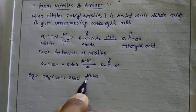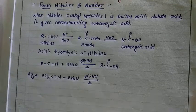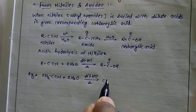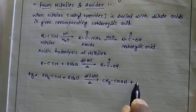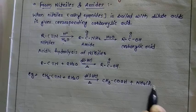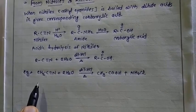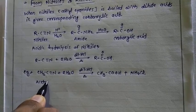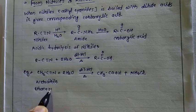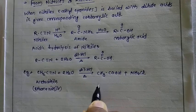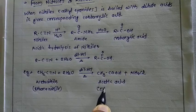With dilute HCl and heating, the cyanide group is converted into carboxylic acid. For example, the product formula is CH₃COOH, and the byproduct is NH₄Cl. The reactant is acetonitrile, which is ethanenitrile, and the product is acetic acid, which is ethanoic acid.